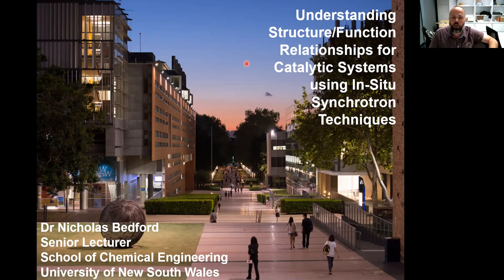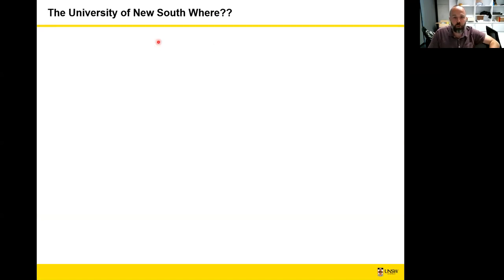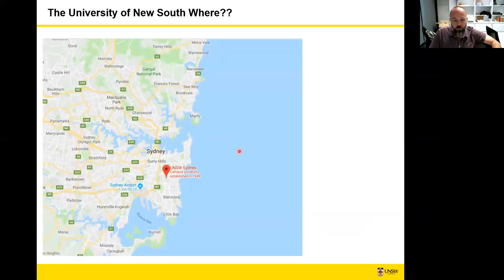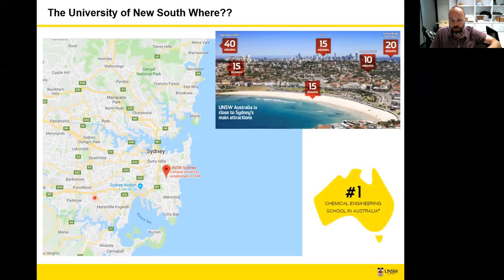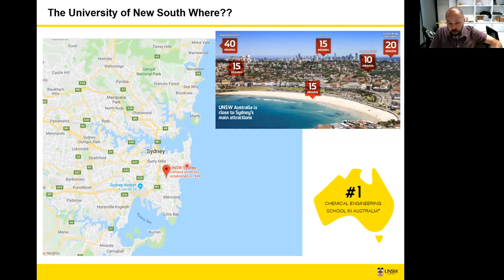I'll be discussing structure-function relationships using in-situ synchrotron techniques, and I'll expand a bit beyond that as we move through the talk. Just to give background on where we're at — University of New South Wales is in Sydney, Australia. We're 15 minutes from the city, 15 minutes from the world famous Bondi Beach, and there's even a nicer, smaller beach five minutes away called Coogee Beach. If anyone wants to come visit and give a seminar at some point once we're permitted to do so, please feel free to contact me.